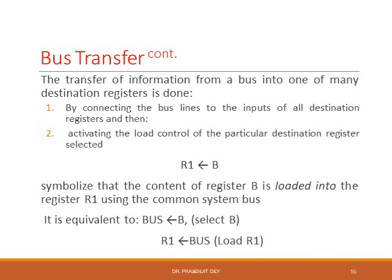Now we have the data in our common bus. This data needs to be transferred from the bus into one of the many destination registers. By connecting the bus lines to the input of all destination registers, we activate the load control of a particular destination register and send the data from the bus to that register. For example, R1 arrow B symbolizes that the content of register B is loaded into register R1 using the common bus — first register B loads data onto the common bus, and then the data is loaded into R1. This is how a bus transfer actually happens in real hardware.